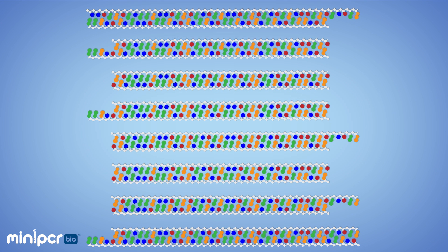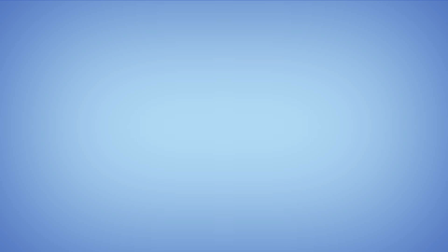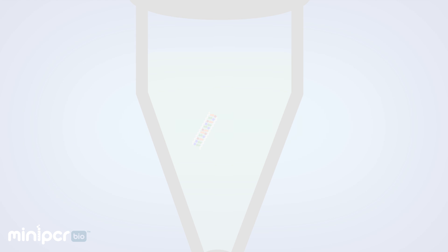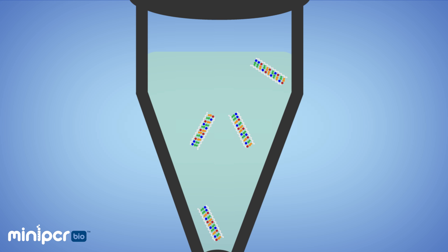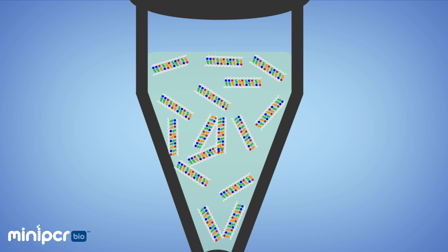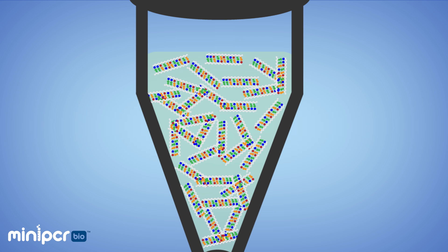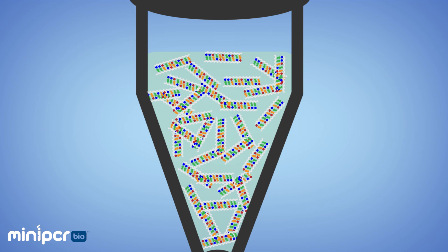We are exponentially amplifying our DNA. This chain of copying explains why it's called polymerase chain reaction. Most PCRs will run for about 30 cycles, which should give us about one billion copies of our original target sequence for every one copy we started with.